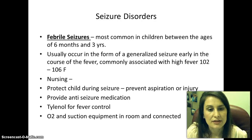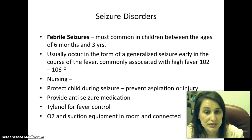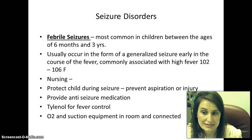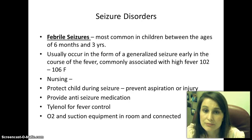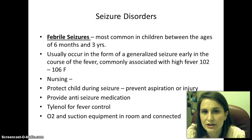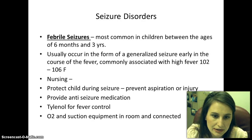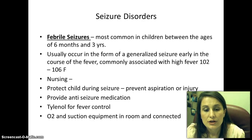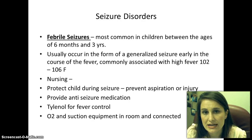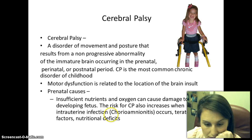With a febrile seizure, it often occurs between six months to three years and usually presents as a generalized seizure. It commonly accompanies a high fever of 102 to 106°F, though sometimes a child can have a lower threshold. Nursing intervention includes timing the seizures, teaching parents what to look for, and how to bring the temperature down. Often treatment is Tylenol, and you might also have an anti-seizure medication such as Valium.